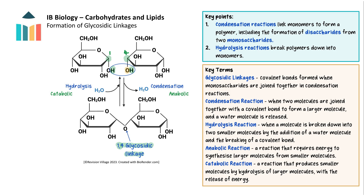Because water is given off, this is a condensation reaction. To split the maltose up to produce the original glucose molecules, water has to be added in a hydrolysis reaction — 'hydro' meaning water, 'lysis' meaning to split. The water molecules provide the hydrogen atom and the hydroxyl group that were lost during the condensation reaction. This reaction makes a larger molecule from two smaller ones, so it is also known as an anabolic reaction and it requires an input of energy. Catabolic reactions break larger molecules down into smaller ones with the release of energy.